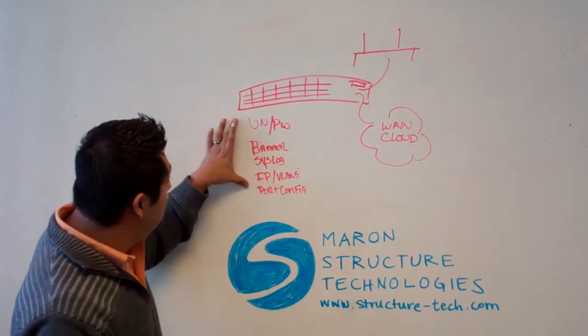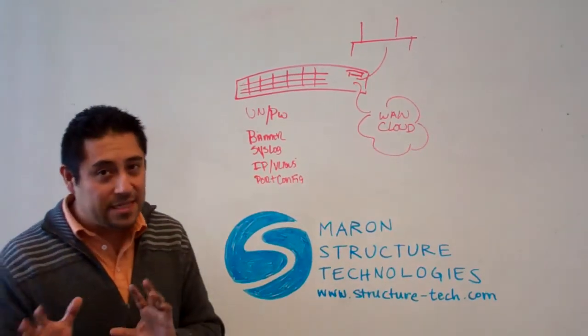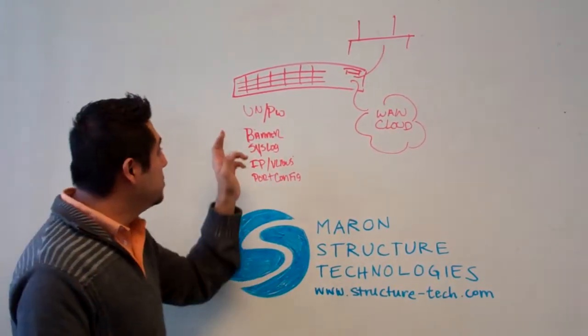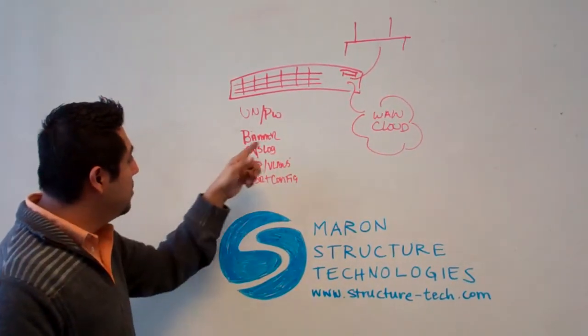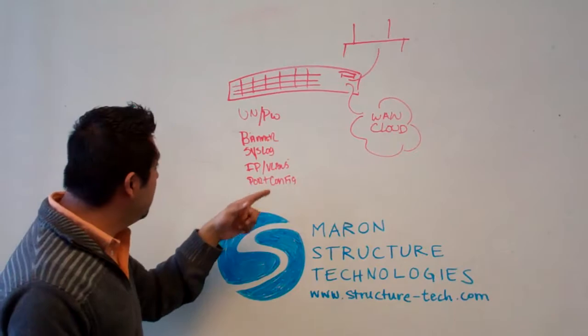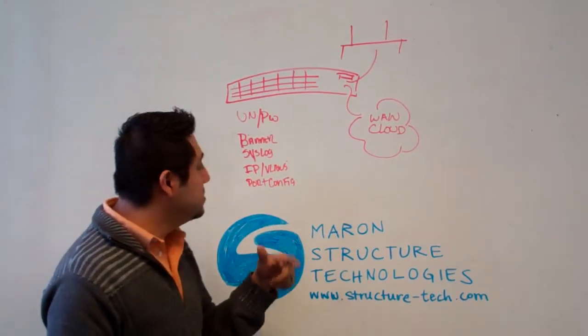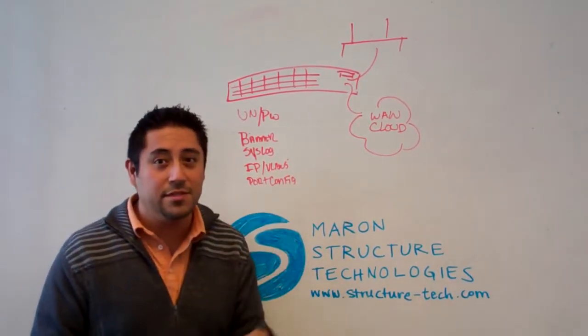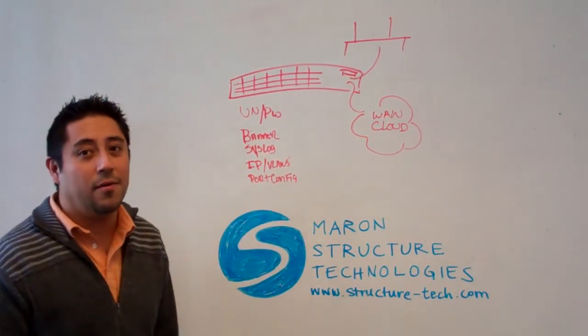Remember, these are the key components to setting up a basic switch: username and password, your banner, your syslog, your IP address, and your port configuration — and you're ready to go.